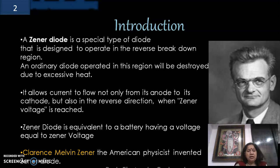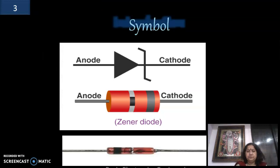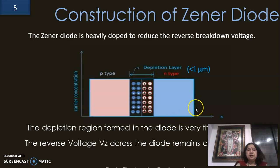Clarence Malvin Zener, the American physicist, invented the zener diode. This is the symbol of a zener diode — the anode is in the form of an arrow and the cathode is in the form of the alphabet Z. This is the three-dimensional view of the zener diode and this is how your zener diode looks like.